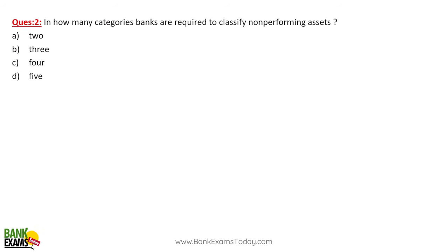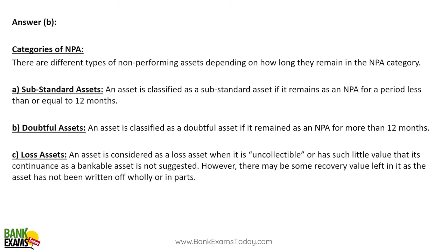Banks are required to classify non-performing assets into three categories. The first is a substandard asset. After an asset becomes overdue for more than 90 days and is an NPA, if it remains an NPA for 12 months or less, it is classified as a substandard asset. These MCQs have been repeated in past few years.